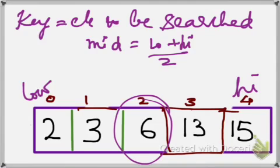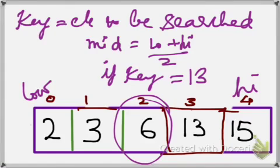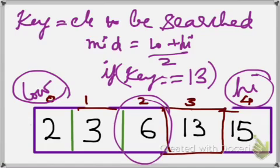The way to check is, if the key element, which is low plus high by 2, if the key is equal to 13, then we get the value of the index where 13 is there. Otherwise, see right here, this is low and this is high. But in this, this is the mid. But the key is 13.